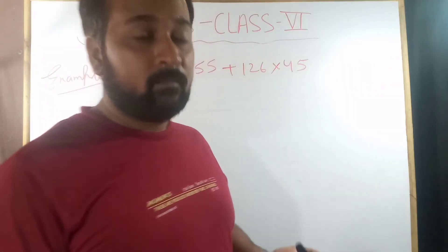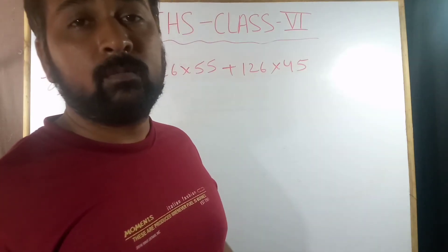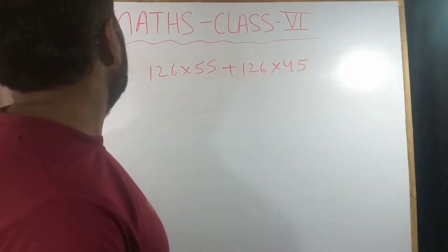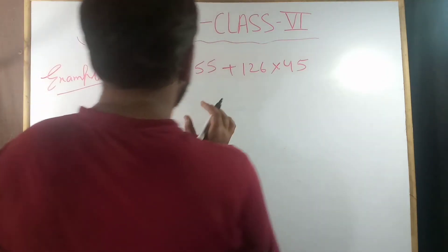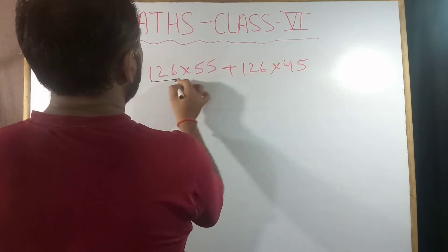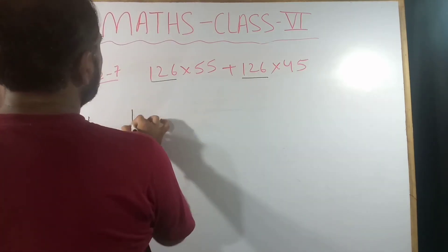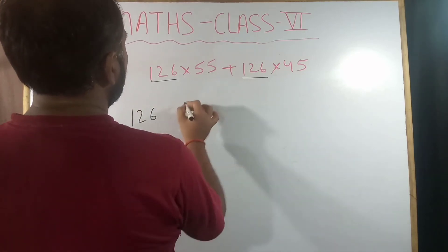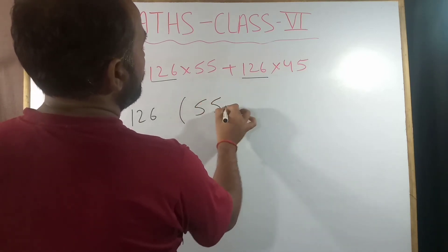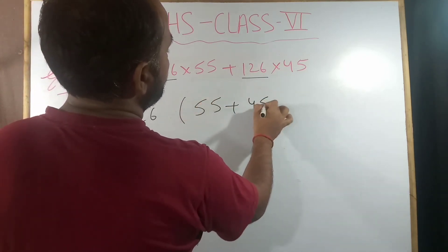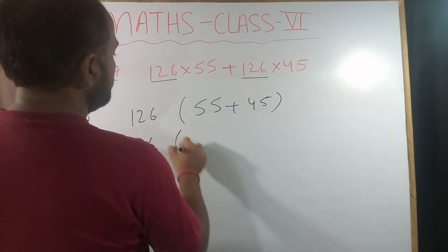Now example seven — we are not doing example six because we have already done it in question number three. Here we have to focus on what is common in both places. 126 is common, so we will take out 126. What will be left inside is 55 here plus 45 here.